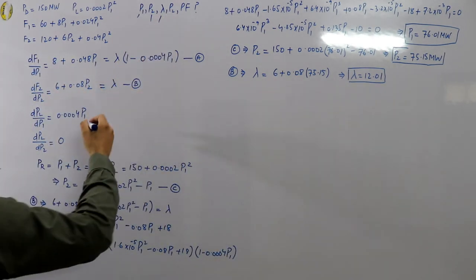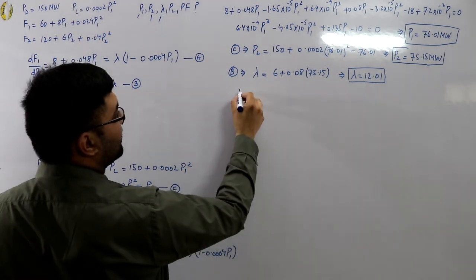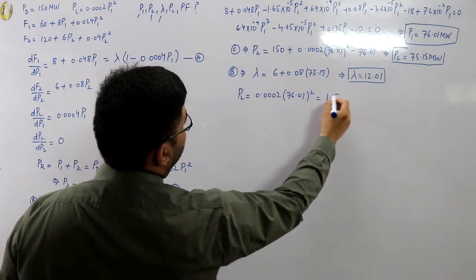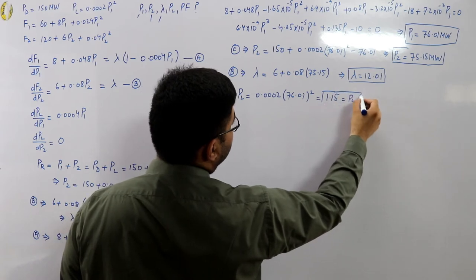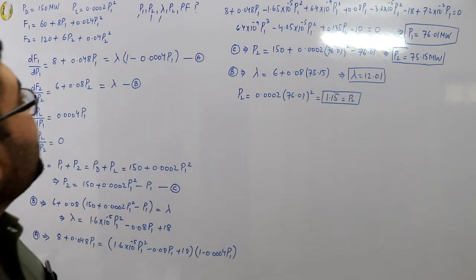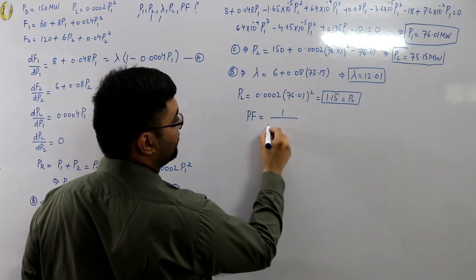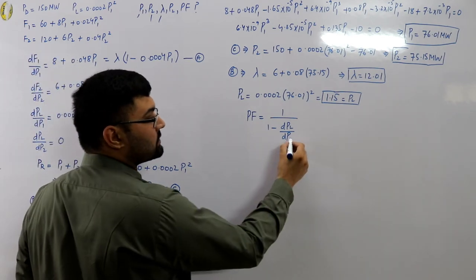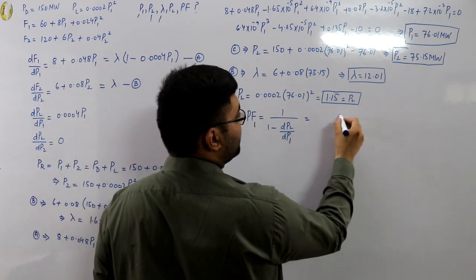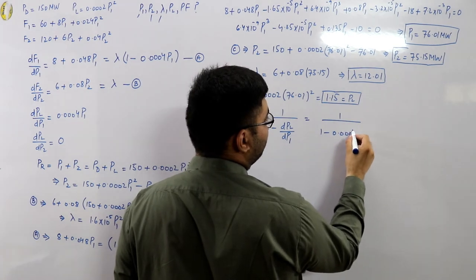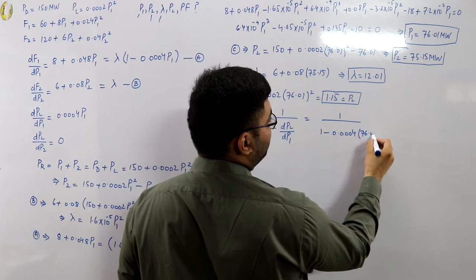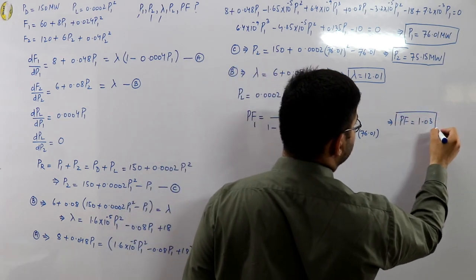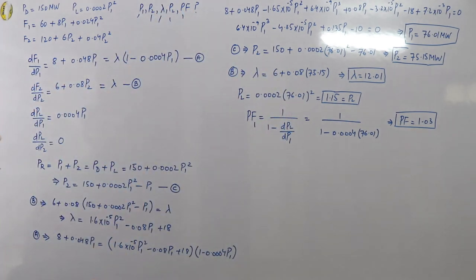The power loss is PL = 0.0002 × P1² = 0.0002 × (76.01)² = 1.15 megawatts. The penalty factor PF = 1 / (1 − dPL/dP1) = 1 / (1 − 0.0004 × 76.01) = 1.03. Power loss is done and penalty factor is done.